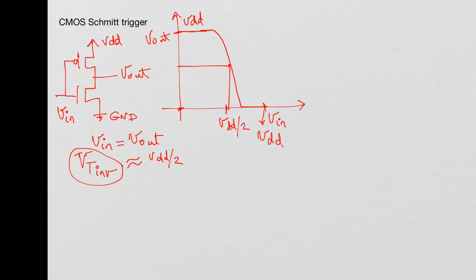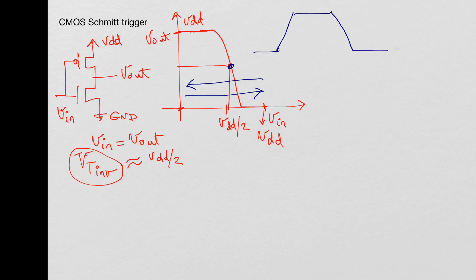One thing we need to notice is that if V-in is going from 0 towards VDD, or if it is going from VDD towards 0, the trip point is always the same. If you draw the transient behavior — the input is low, goes high (assume very slow transitions) — the output would be high, start switching, and then go back up high. If these are slow-moving waveforms, these two switching points are the same, basically the threshold voltage of the inverter.